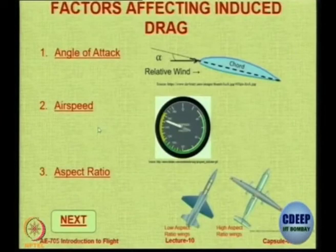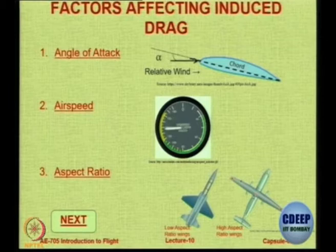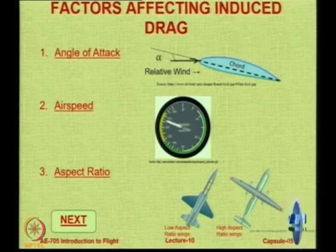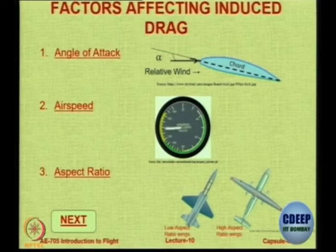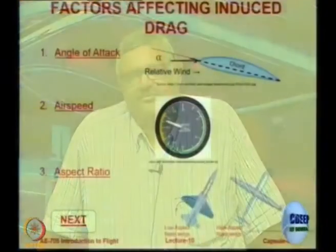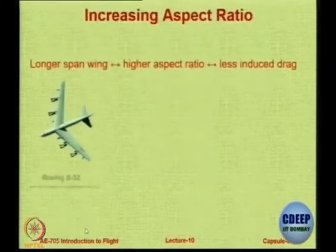So what do you do for angle of attack — do you reduce it or increase it? To reduce the induced drag, if you reduce angle of attack, what happens to C_L? It also reduces. So if you increase airspeed, C_L reduces. If you increase aspect ratio, there is also a reduction. So these are the ways in which you can reduce induced drag.